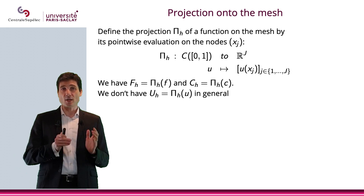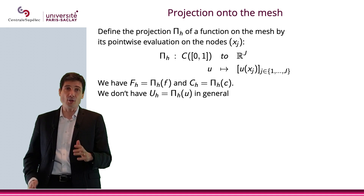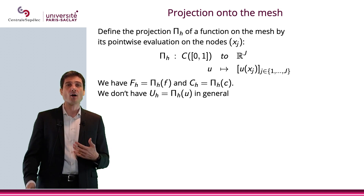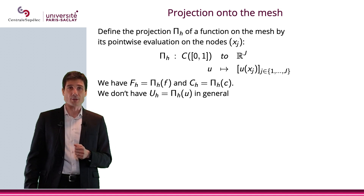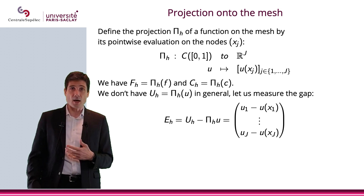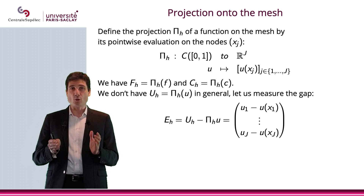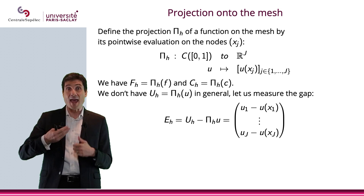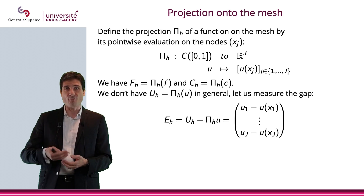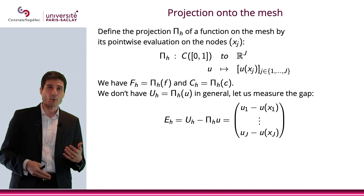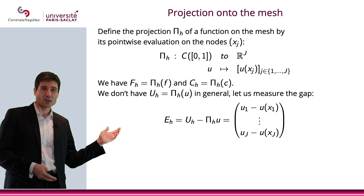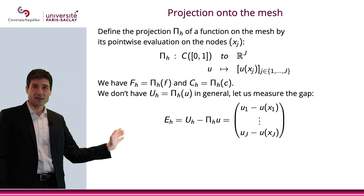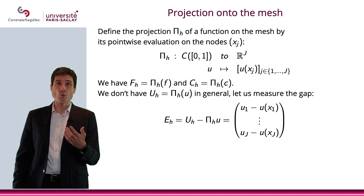We do not have u_h equals π_h(u), as we just said — not in general. If we do, well, that's a wonderful thing — we just open champagne. But usually there is no reason to have equality. What we are interested in doing is to measure the gap between u_h, our vector of approximations u_1 to u_j, and the actual values we're trying to approximate, which is the vector u(x_1) to u(x_j). So we're interested in the vector u_1 − u(x_1) all the way down to u_j − u(x_j).